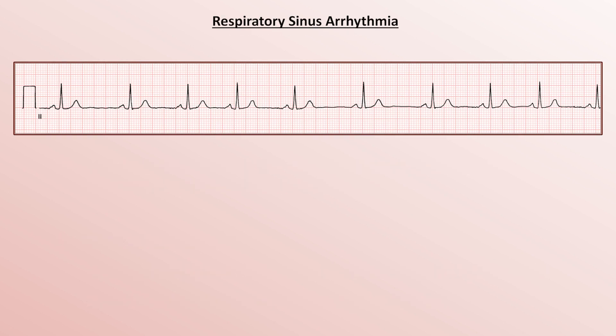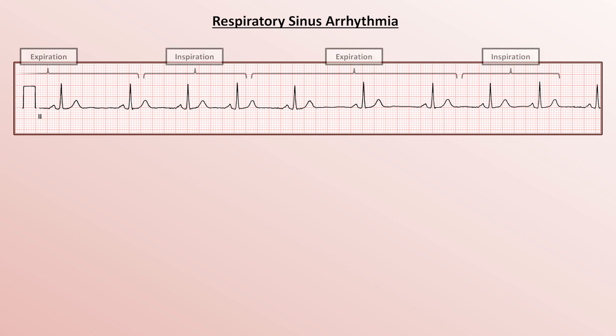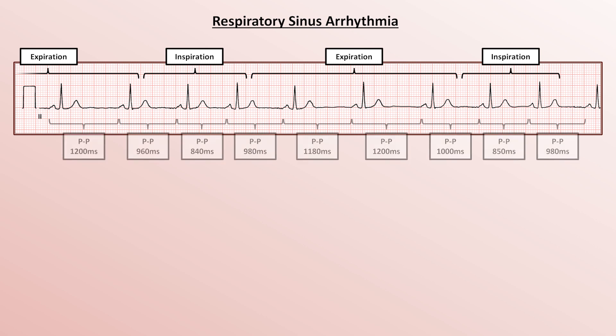Here's an example of respiratory sinus arrhythmia. To help understand what's going on, I'll label when the patient is expiring and inspiring. As you can see, the sinus rate increases during inspiration and decreases during expiration, with a relatively smooth transition in rate. This pattern is caused by changes in vagal tone secondary to complex reflex mechanisms interconnecting the pulmonary and cardiovascular systems.